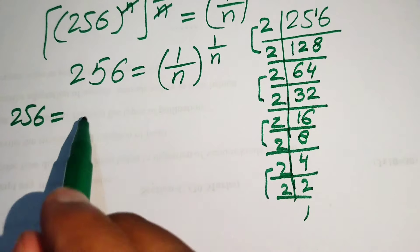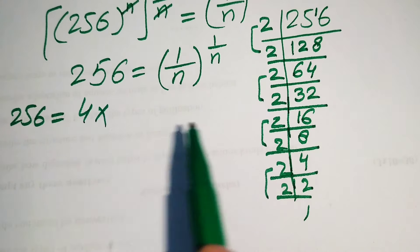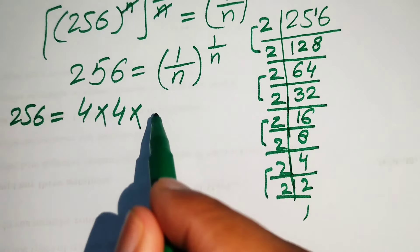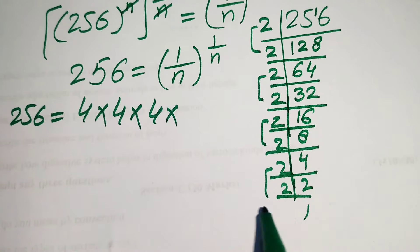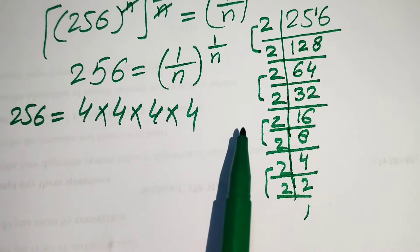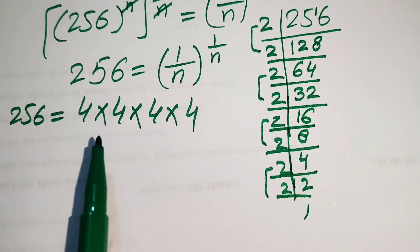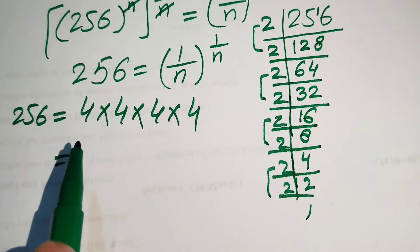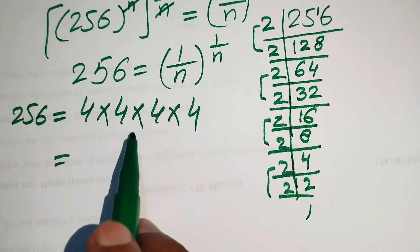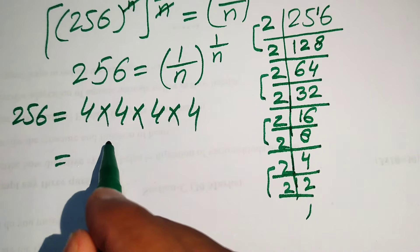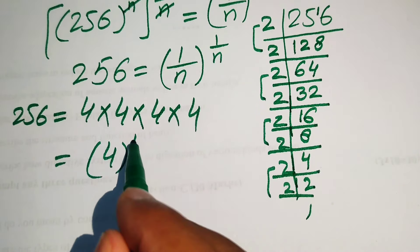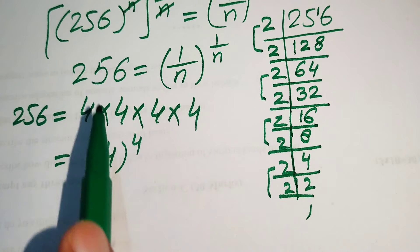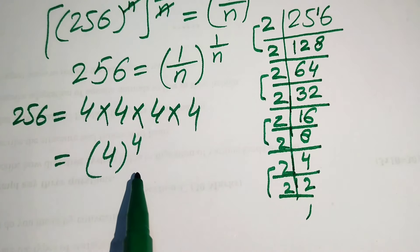Since we have 4 pairs of 2, we can write 256 as 2×2 times 2×2 times 2×2 times 2×2, which equals 4 multiplied by itself 4 times. So 256 equals 4 to the power of 4. We now replace 256 with 4 to the power of 4 in our equation.